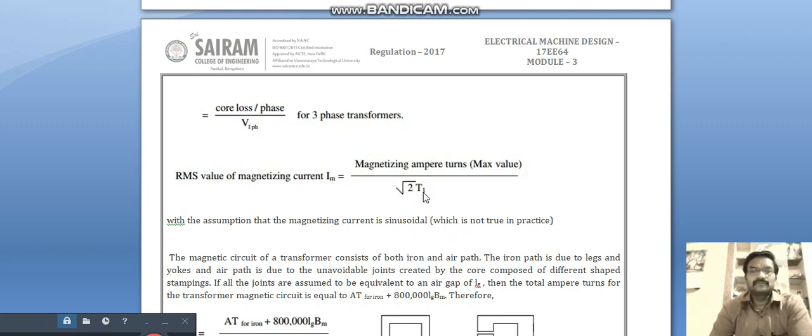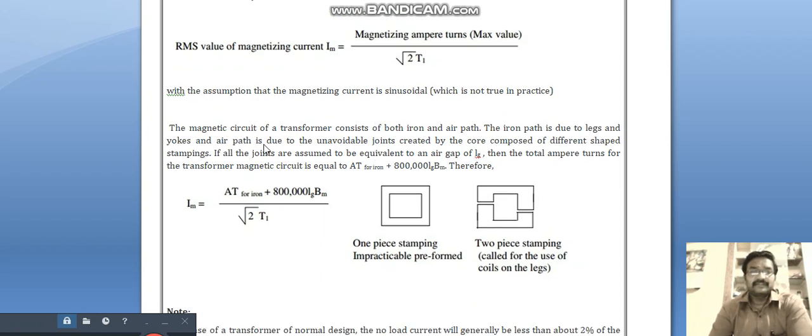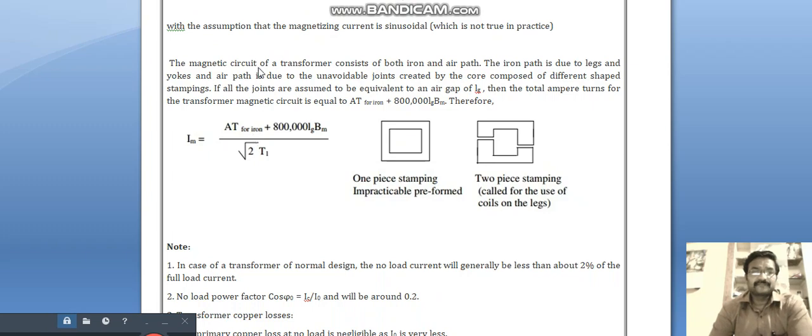With the assumption that the magnetizing current is sinusoidal, which is not true in practice. The magnetic circuit of a transformer consists of both iron and air path. The iron path is due to legs and yokes, and air path is due to unavoidable joints created by the core composed of different step-shaped stampings.